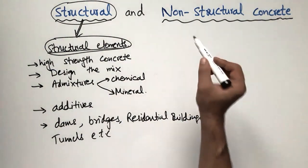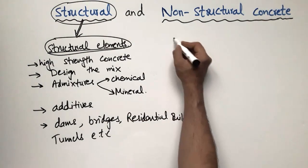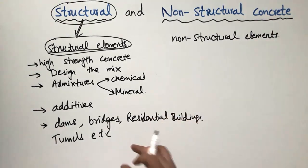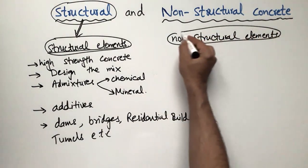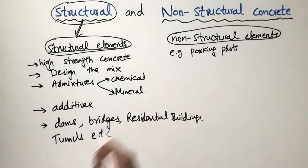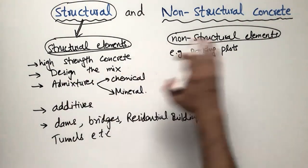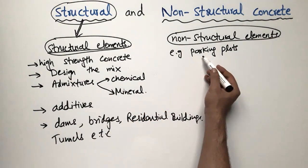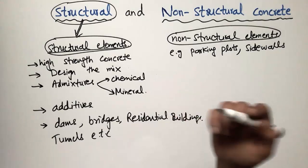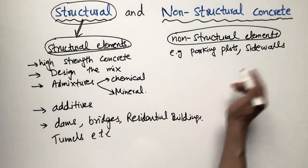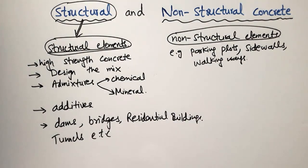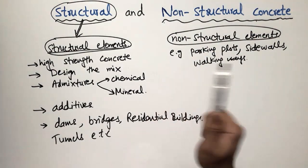Non-structural concrete is the type of concrete used for non-structural elements — elements that are not designed to take any special load. Examples include parking lots, where concrete surface is placed without a design mix; side walls with minimal load; and walkways, where no special concrete design is required.